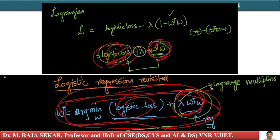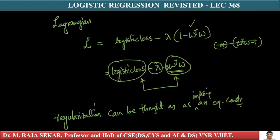Regularization can be thought of as imposing an equality constraint, and the solution is obtained through Lagrange multipliers. I am just connecting the dots here. Of course, we saw the need for regularization from multiple perspectives. One way to interpret regularization is through the equality constraint w-transpose-w equals one and Lagrange multipliers.